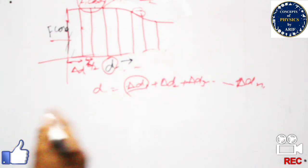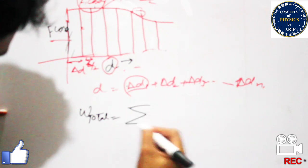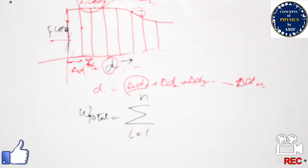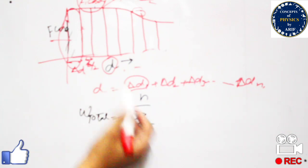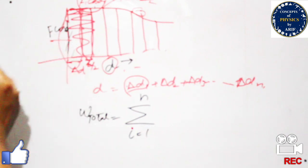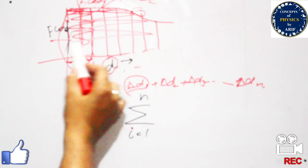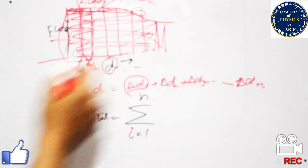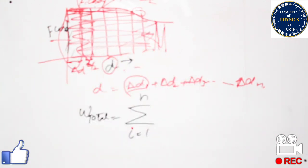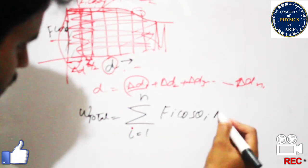We can generalize this with a summation. The total work W_total equals the summation from i = 1 to n of Fᵢ·cosθᵢ·Δdᵢ. Substituting i = 1 gives the first interval, i = 2 gives the second, and so on. The total work done is therefore equal to the effective area under the curve.